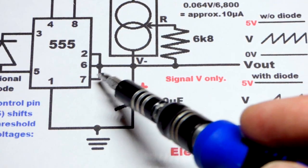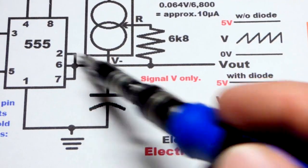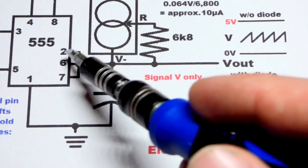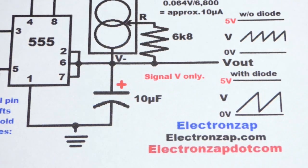The capacitor will instantly discharge down to one-third supply voltage, and then pin 2 will notice that one-third supply voltage and tell it to stop discharging. Then the capacitor can start charging again.